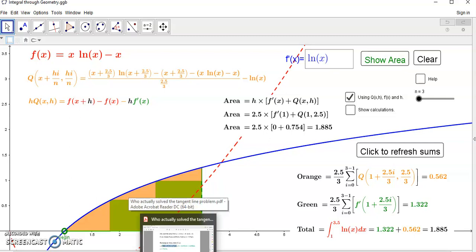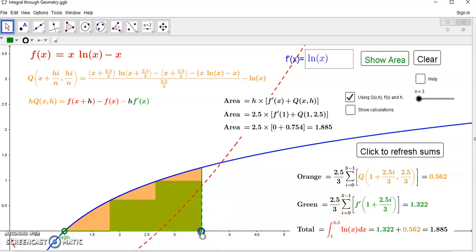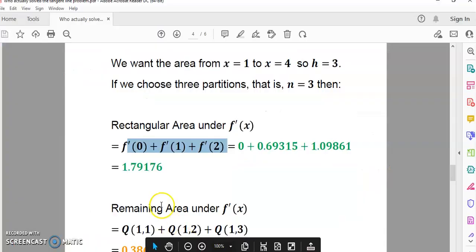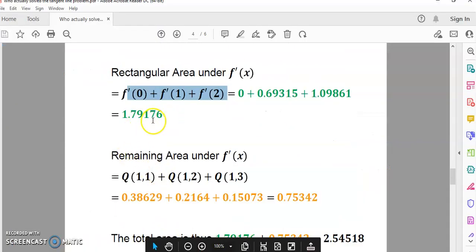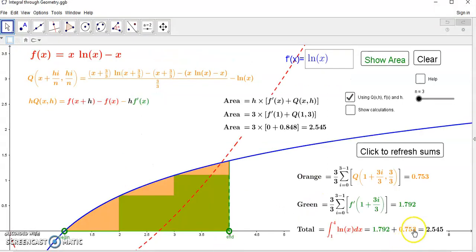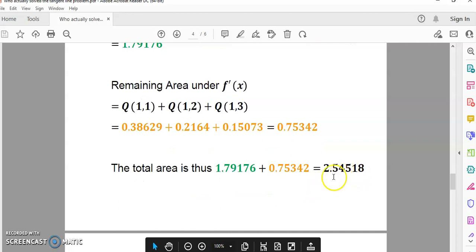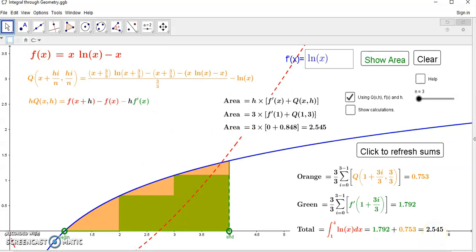And so, if we refresh this, there's just one mistake here. This is 3.5. Let's make it 4. And now, refresh, and now it's correct. I said from 1 to 4, not from 1 to 3.5. So, you always have to click refresh sums on the applet to get the right area. So that's 1.79176. And the remaining area is 0.75342. And that's also correct. And so, the total area is the sum, which is 2.54518, and that also agrees with this value here.